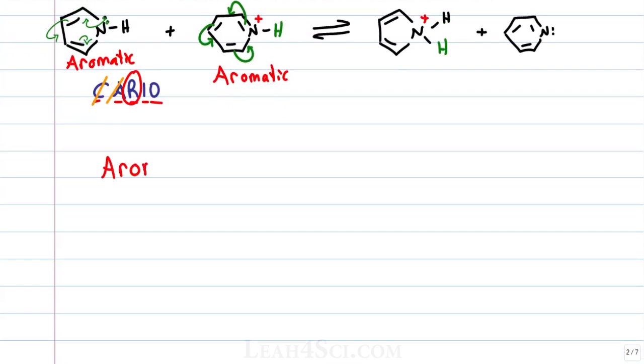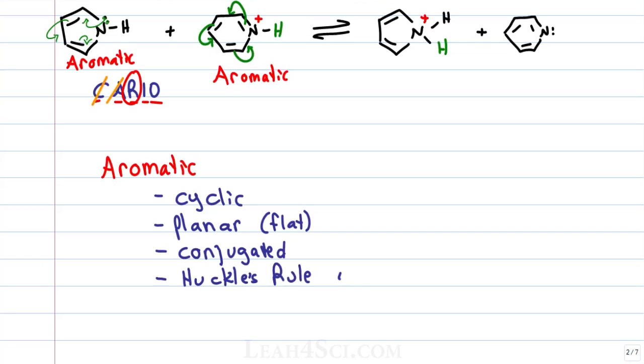As a quick reminder, for something to be aromatic it has to be cyclic meaning it has to be a ring, it must be planar meaning flat and the key here is to look for the pi bonds, the p orbitals, the resonance. It must be conjugated which means that the pi bonds are resonating around the entire aromatic ring and it must follow Huckel's rule of 4n plus 2 equals pi where when you fill in the pi bonds the value for n results in a whole number not a fraction.